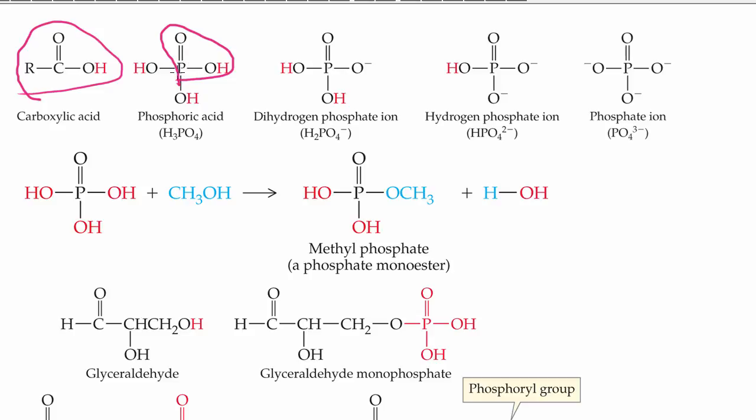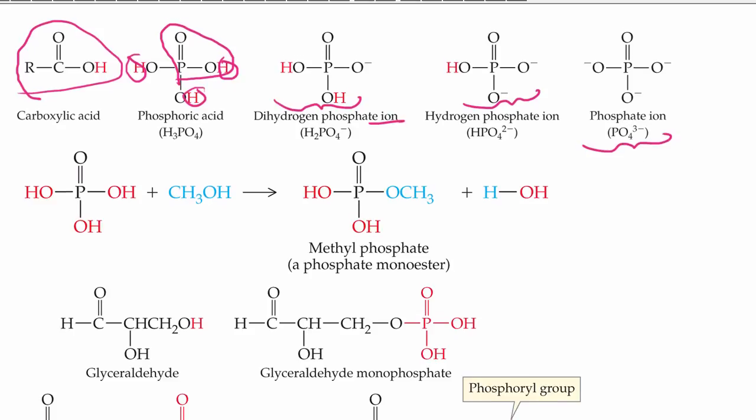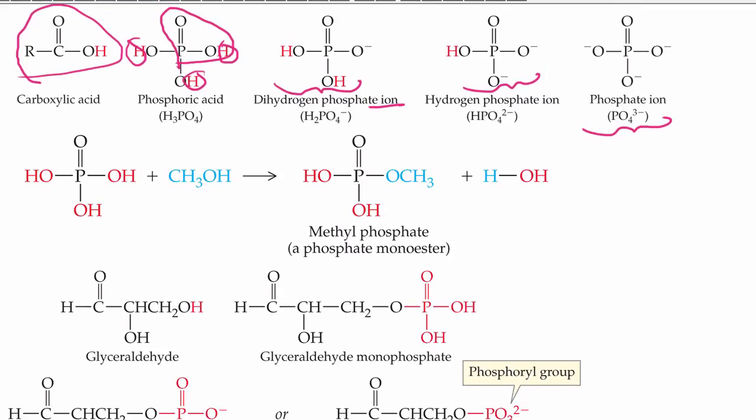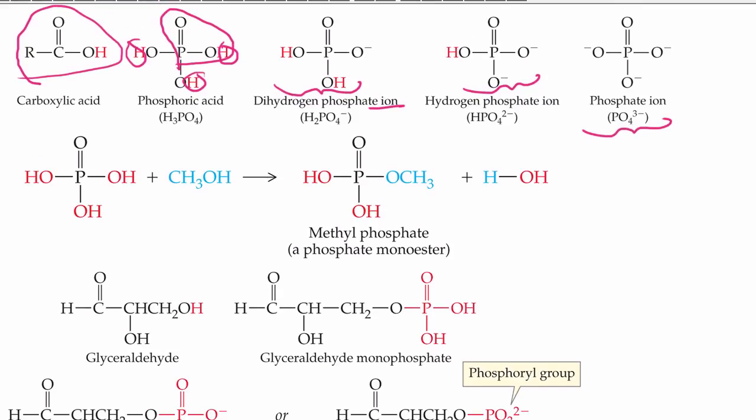Phosphoric acid has three ionizable hydrogens, and that's one, two, three. And because of that, when one hydrogen is lost, we end up with dihydrogen phosphate ion. When two hydrogens are lost, we end up with hydrogen phosphate ion. And when three hydrogens are lost, of course, the phosphate ion, which you are familiar with from last semester.